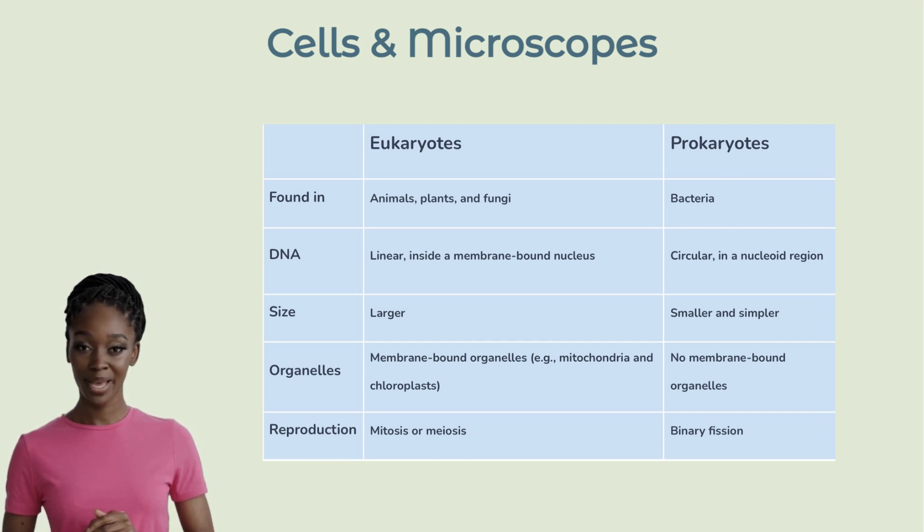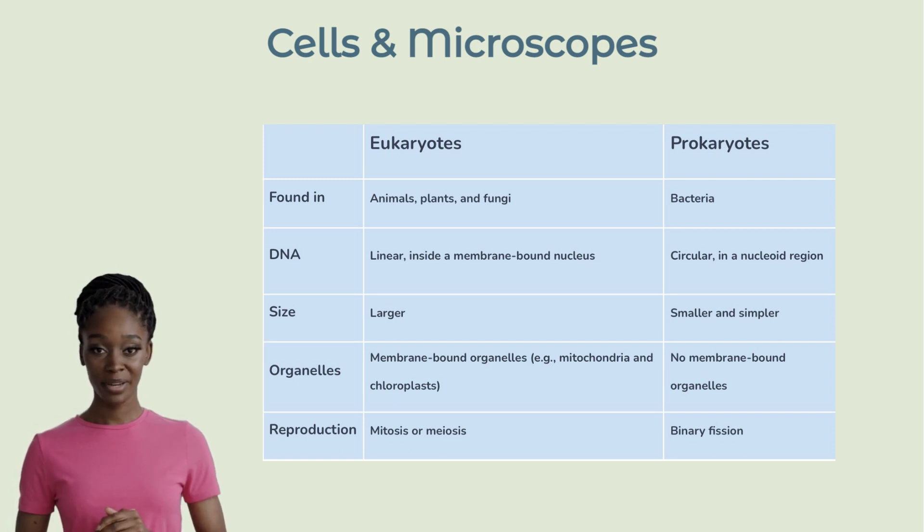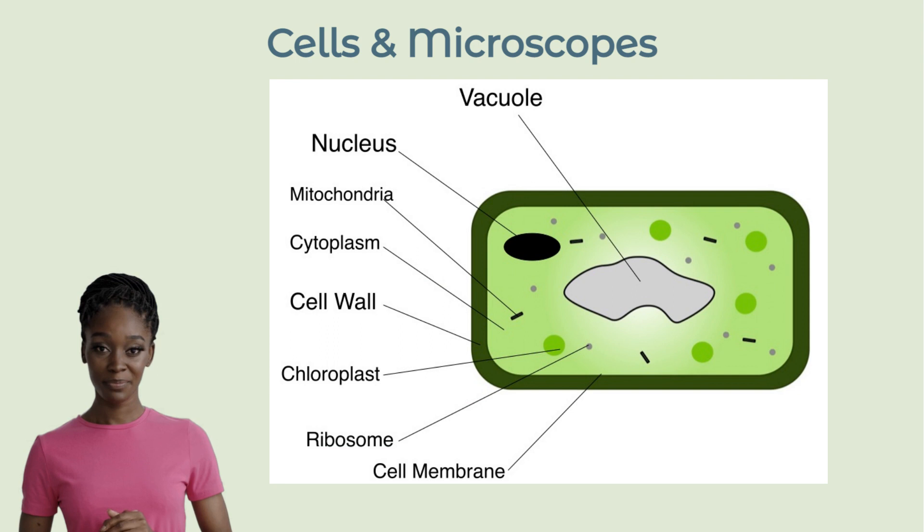Now let's compare plant and animal cells. Both are eukaryotic, but they have unique structures and functions. First, we'll explore the components of plant cells.